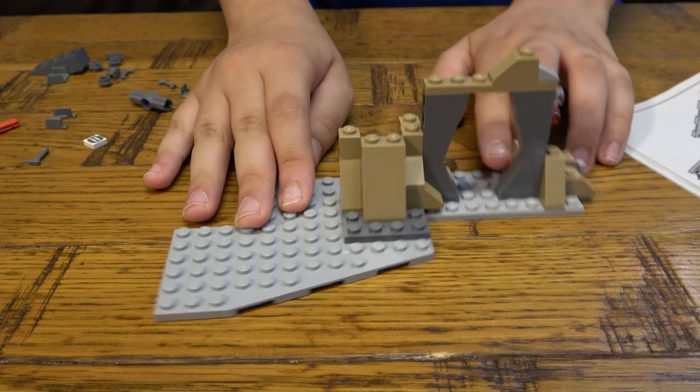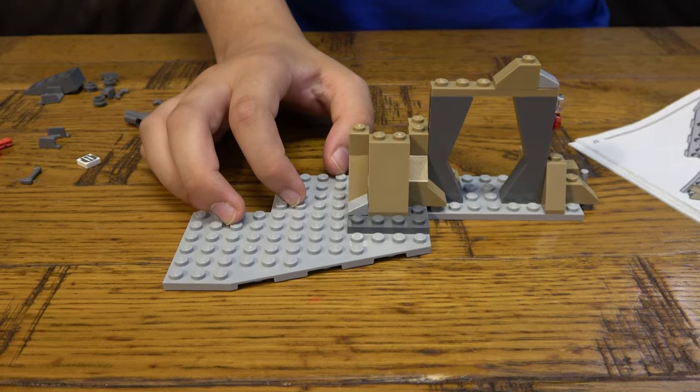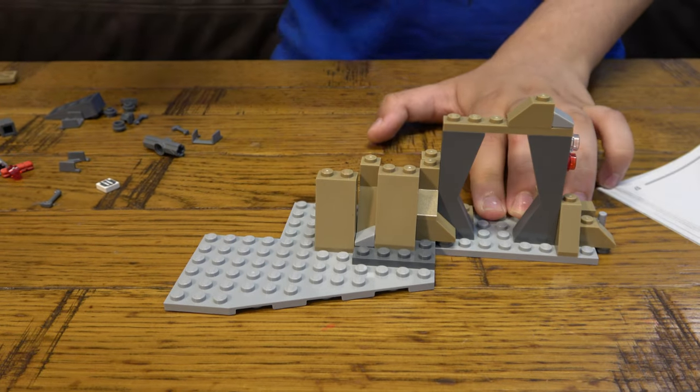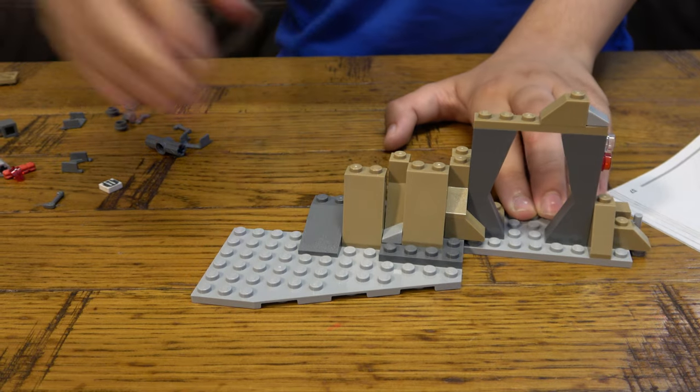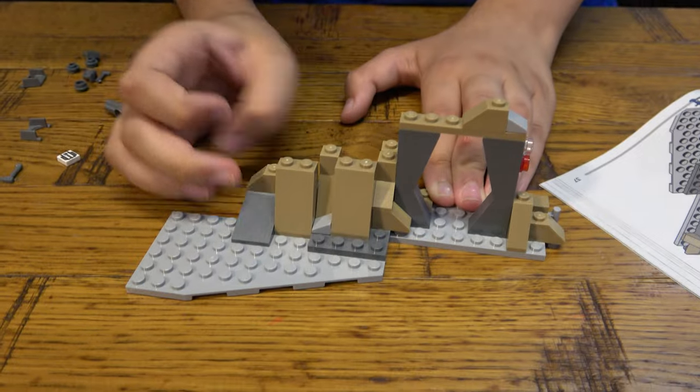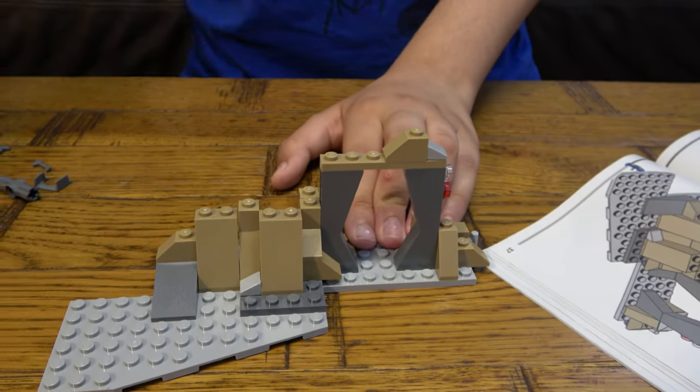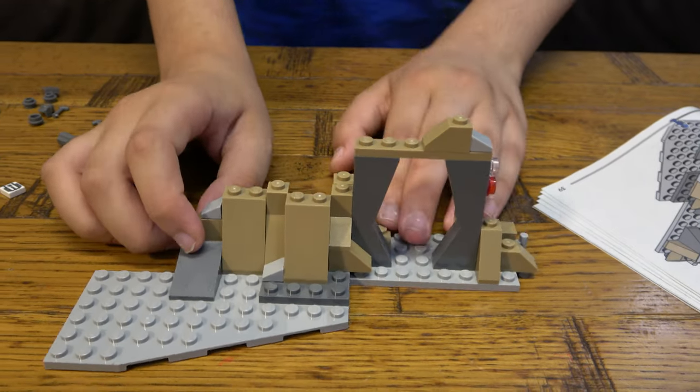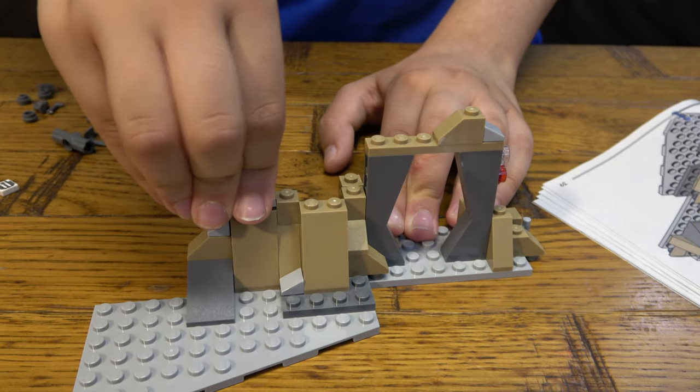Some more slopes and then one of these. There we go. Then you're going to get a slope there like so. Next up we're going to place another one of these, so basically making a small little mountain. Place another slope onto here, and then a cheese slope there.